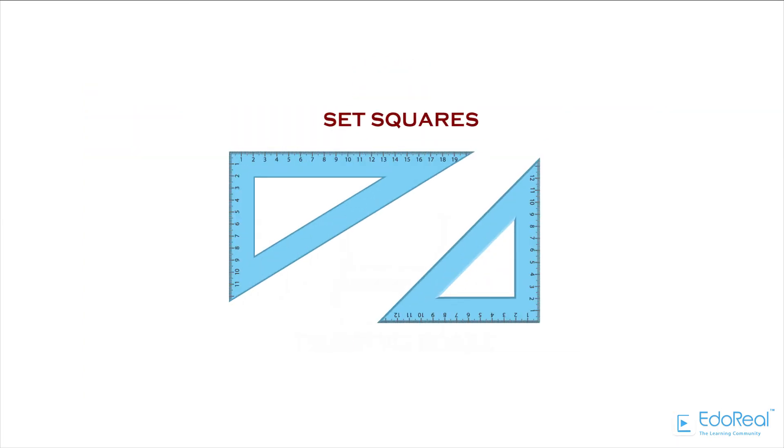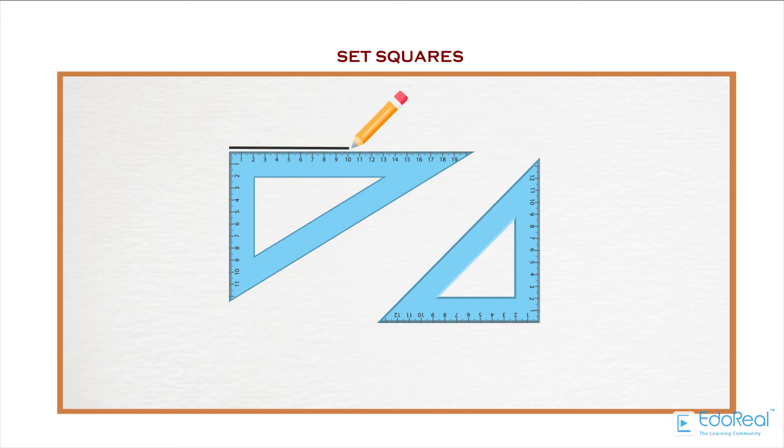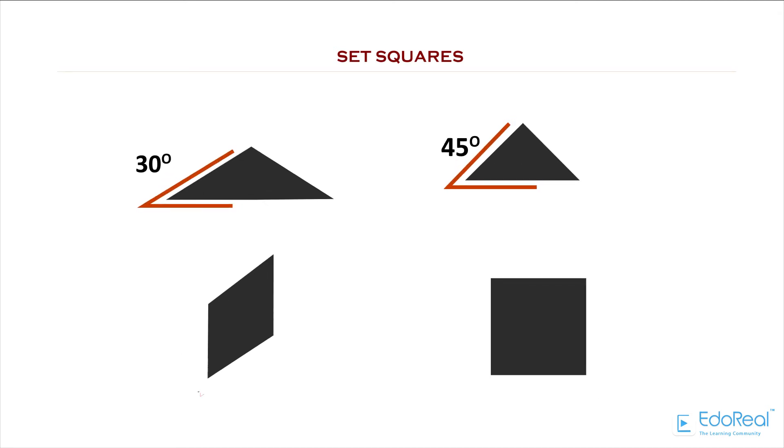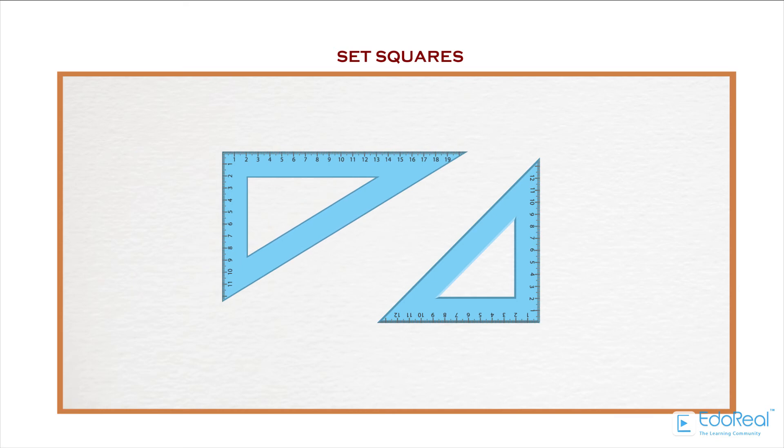Set squares are used to draw lines with an angle between them. In most of the structures, 30, 45, 60, and 90-degree lines are most common, so set squares make the work easier for this type of drawing. Generally, set squares are of two types. One is a 45-degree set square and another one is a 30-60-degree set square.